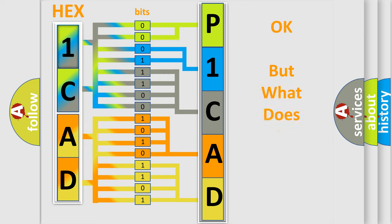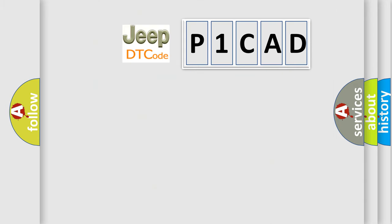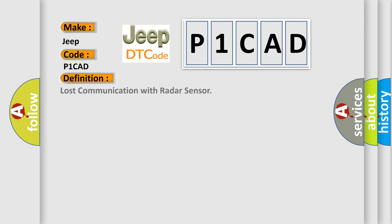The number itself does not make sense to us if we cannot assign information about what it actually expresses. So, what does the Diagnostic Trouble Code P1CAD interpret specifically for Jeep car manufacturers? The basic definition is Lost communication with radar sensor.